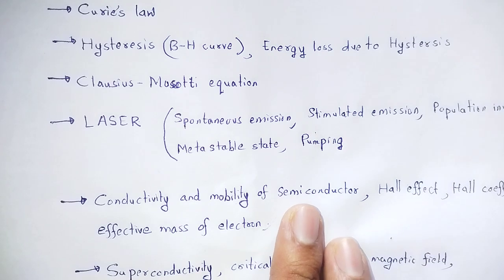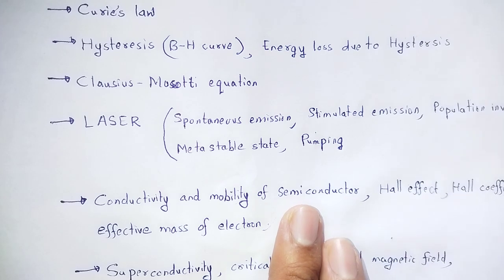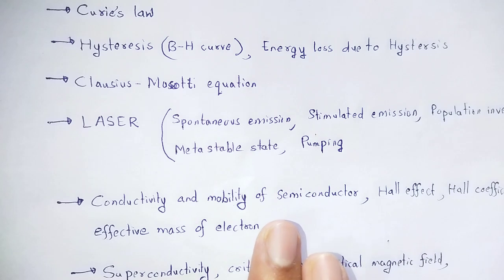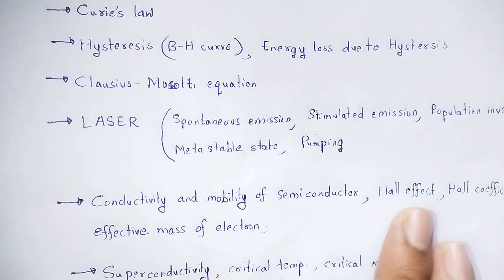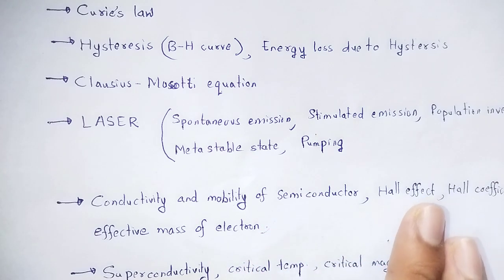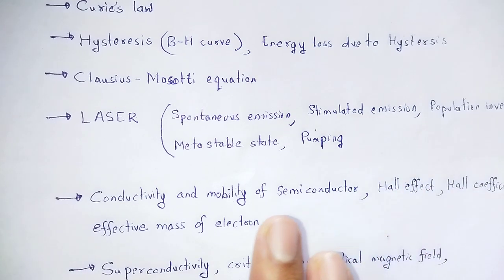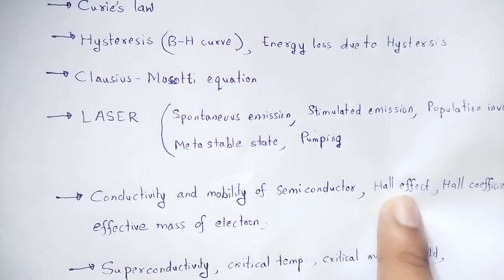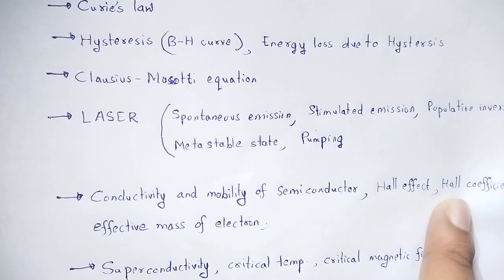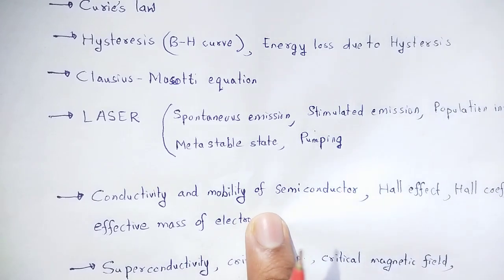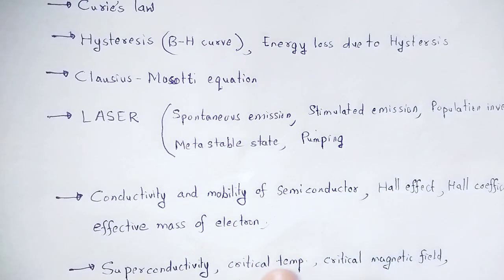Semiconductors: P-type and N-type, extrinsic and intrinsic types. Majority charge carriers and minority charge carriers. Conduction band, valence band, and band gap. Important topics include mobility, conductivity, and the mathematical relation for Hall effect, Hall coefficient, and effective mass of electrons.